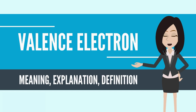When an electron loses energy, thereby causing a photon to be emitted, it can move to an inner shell which is not fully occupied. Valence energy levels correspond to the principal quantum numbers N equals 1, 2, 3, 4, 5, or are labeled alphabetically with letters used in the X-ray notation: K, L, M.